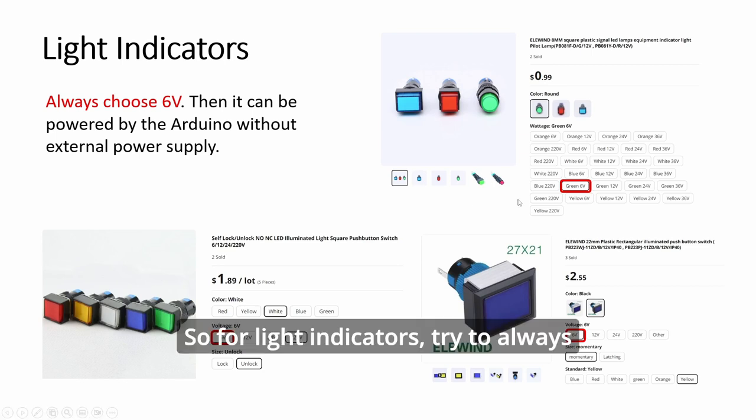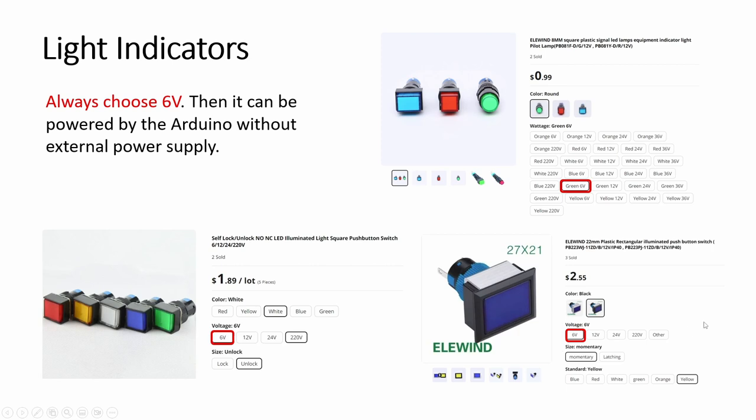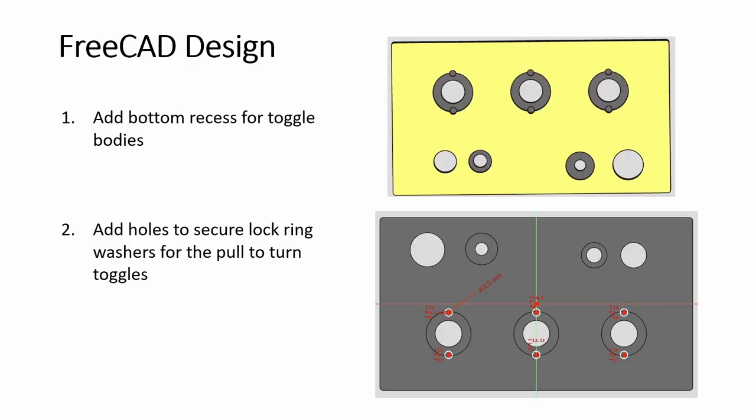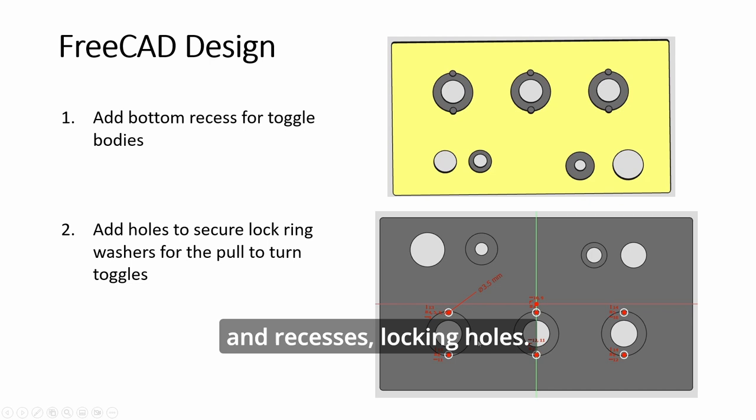So for light indicators, try to always use the six-fold as mentioned before. Then recesses, locking poles.